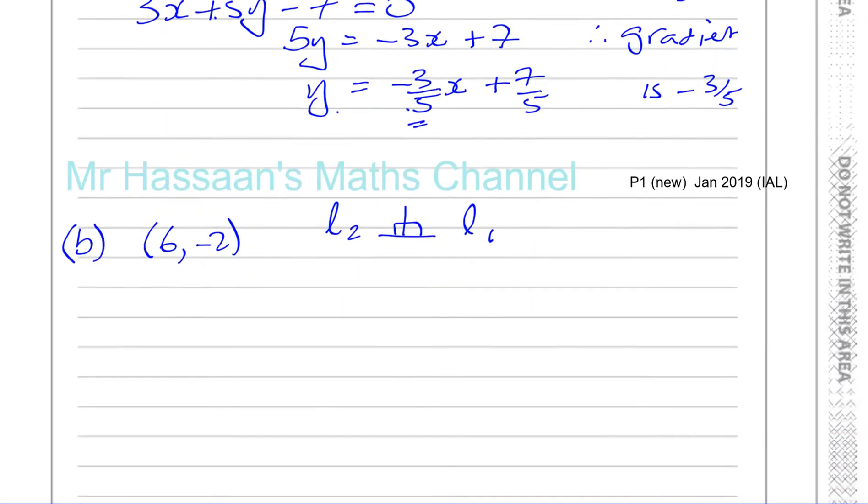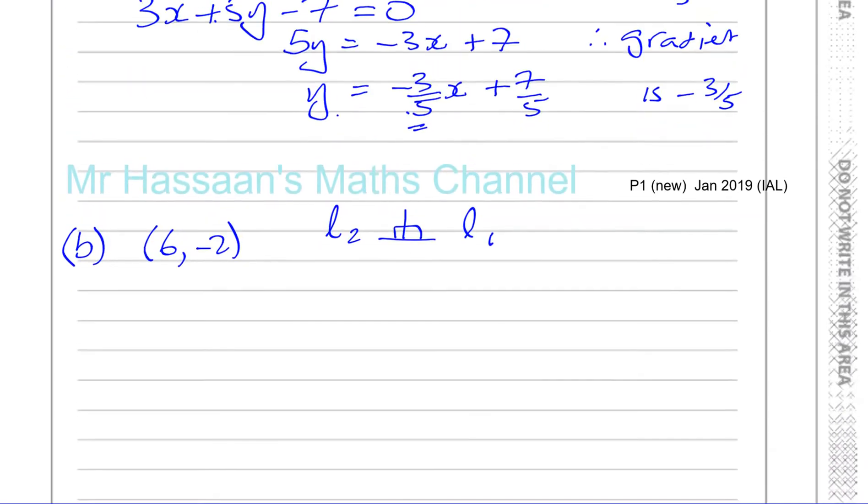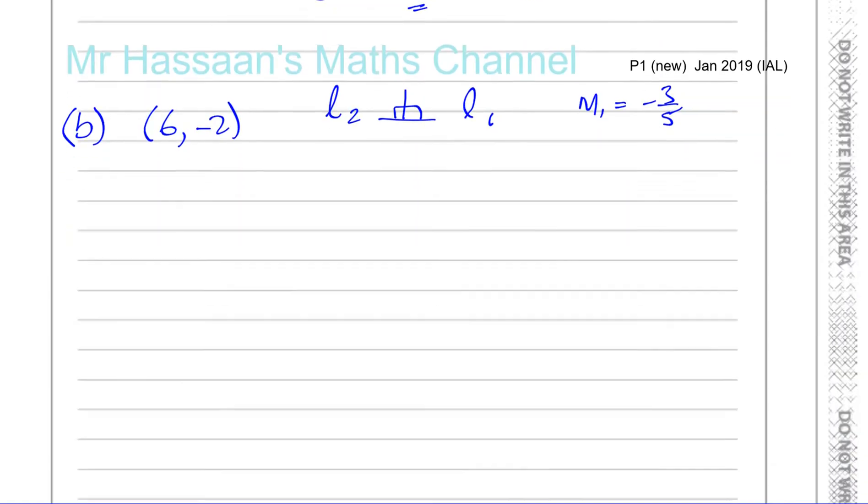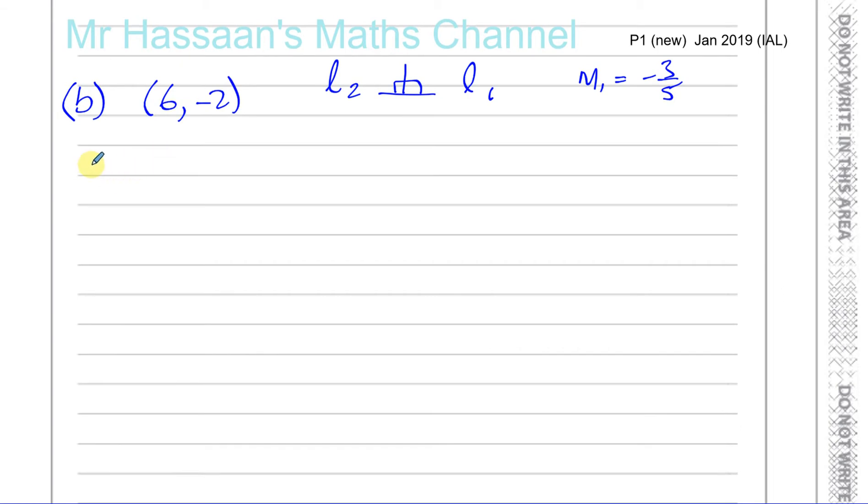To find the equation of a straight line, we need to know two pieces of information: one is a point on the line, and two is the gradient of the line. So we need to know the gradient of line l2. Now, how are the gradients of lines which are perpendicular related?